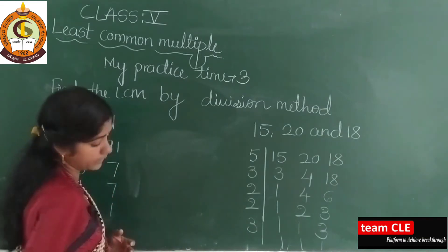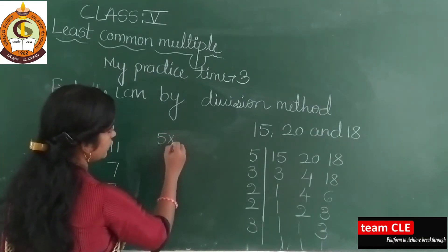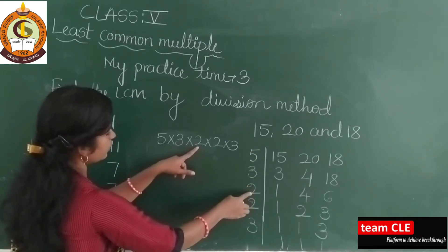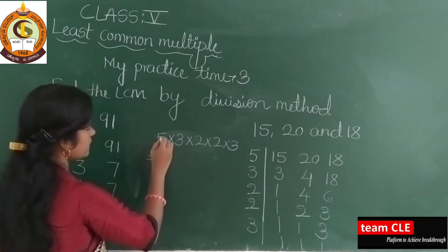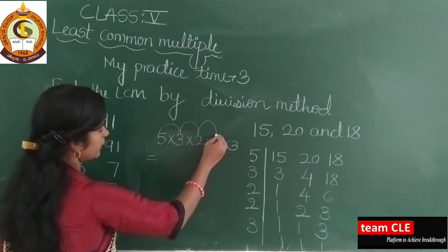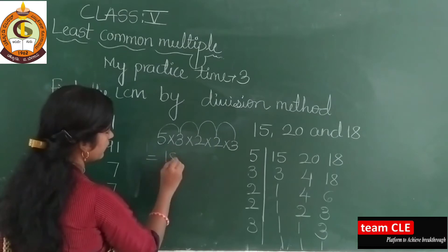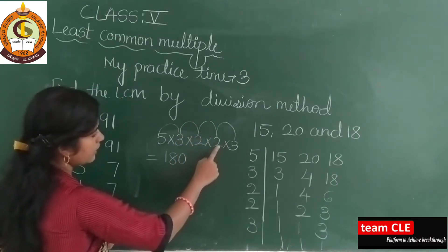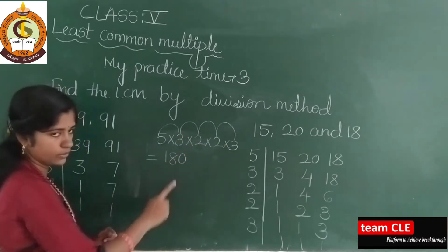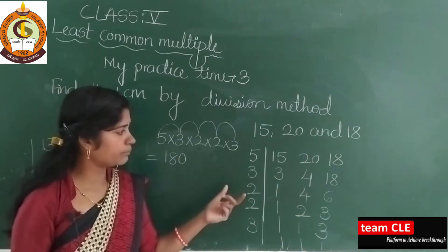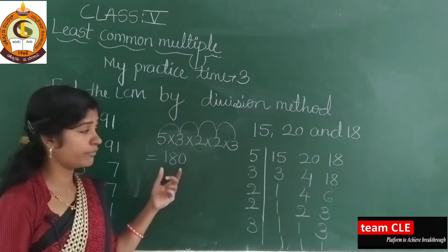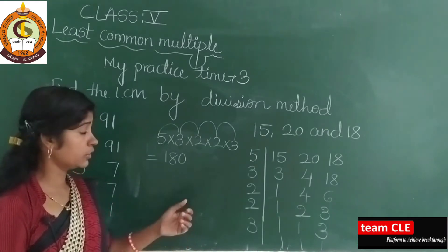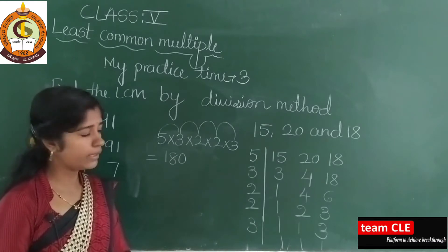Take here: I will multiply 5 × 3 × 2 × 2 × 3. 5 threes are 15, 15 twos are 30, 30 twos are 60, 60 threes are 180. So what is the LCM of 15, 20 and 18? That is 180. Instead of writing 15 ones are table, 20 ones are table, 18 ones are table and circling common digits, we are using the division method. For this, you need to know tables compulsorily. I hope you understood this concept.